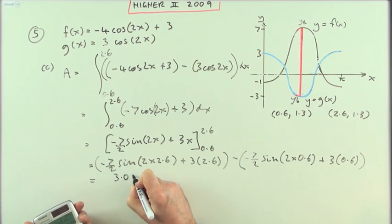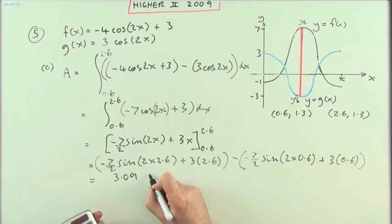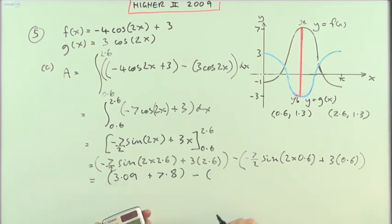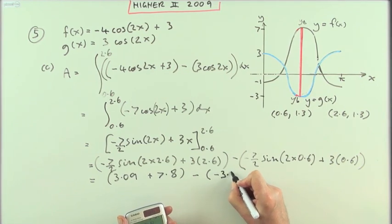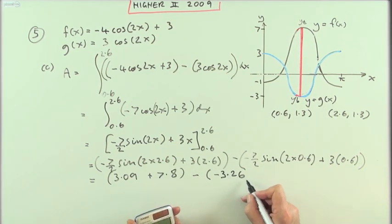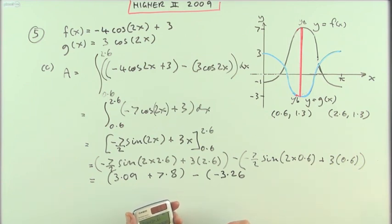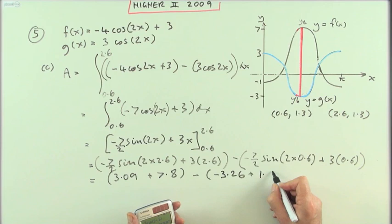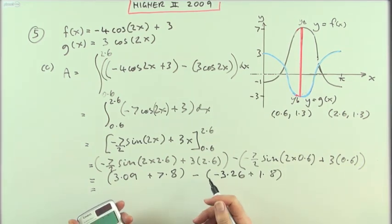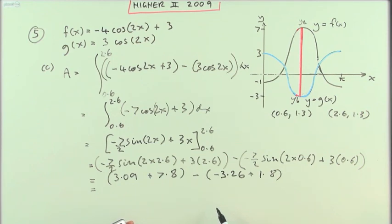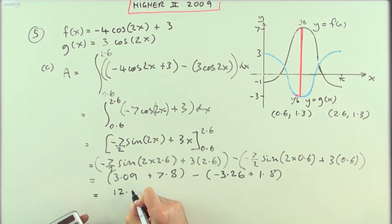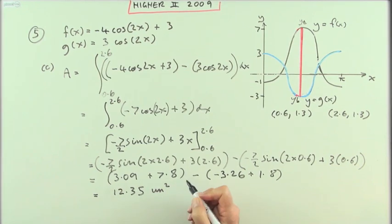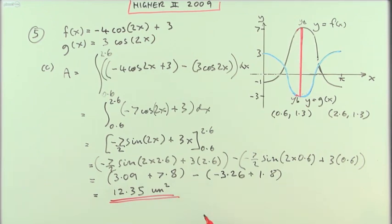Substituting x = 2.6: negative 7 over 2 times sine(5.2) plus 3 times 2.6, which gives approximately 3.09 and 7.8. Substituting x = 0.6: negative 7 over 2 times sine(1.2) plus 3 times 0.6, giving approximately negative 3.26 and 1.8. Combining everything — remembering it becomes plus 3.26 minus 1.8 — gives 12.35 units squared, allowing for variations in rounding at various stages.